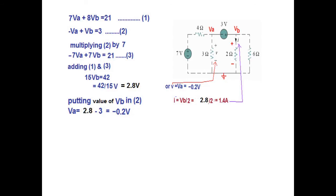The second answer he wants is I. We had already written the equation for I which is VB divided by 2 ohm. Now we have found VB to be 2.8. So 2.8 divided by 2 is 1.4 ampere.